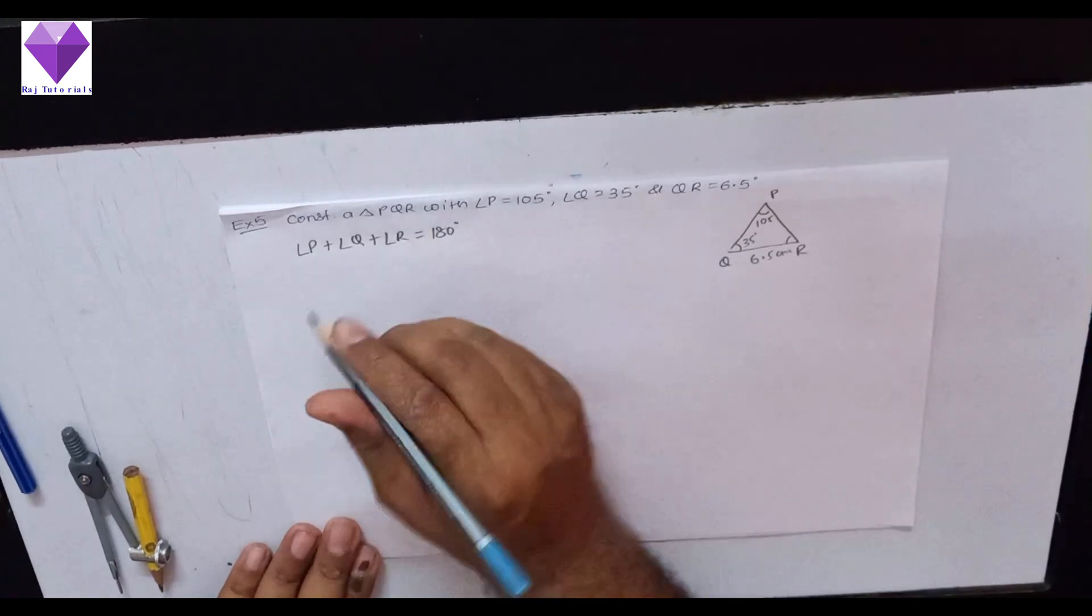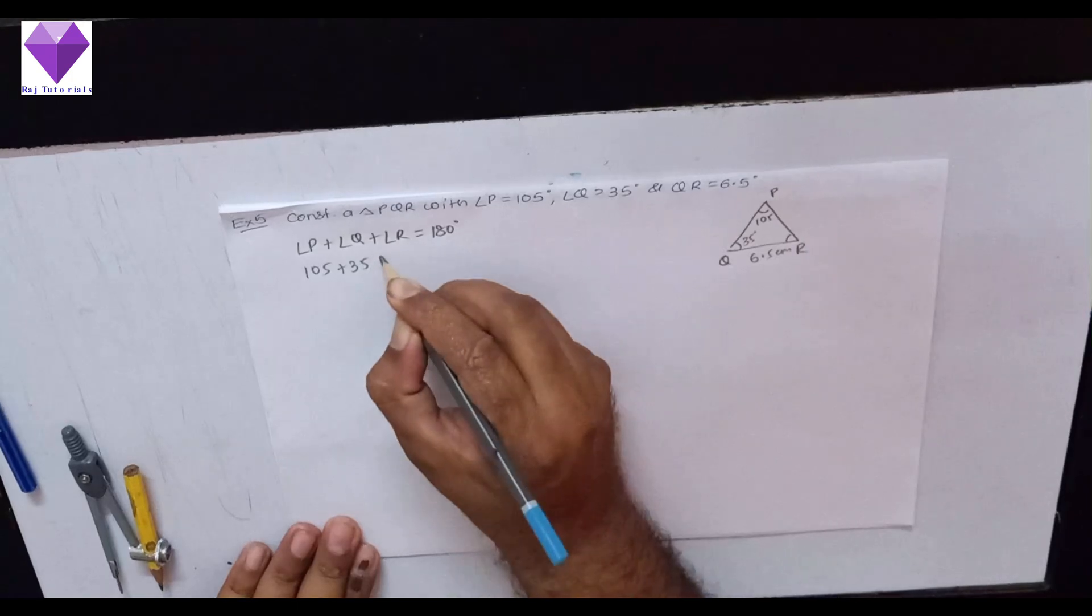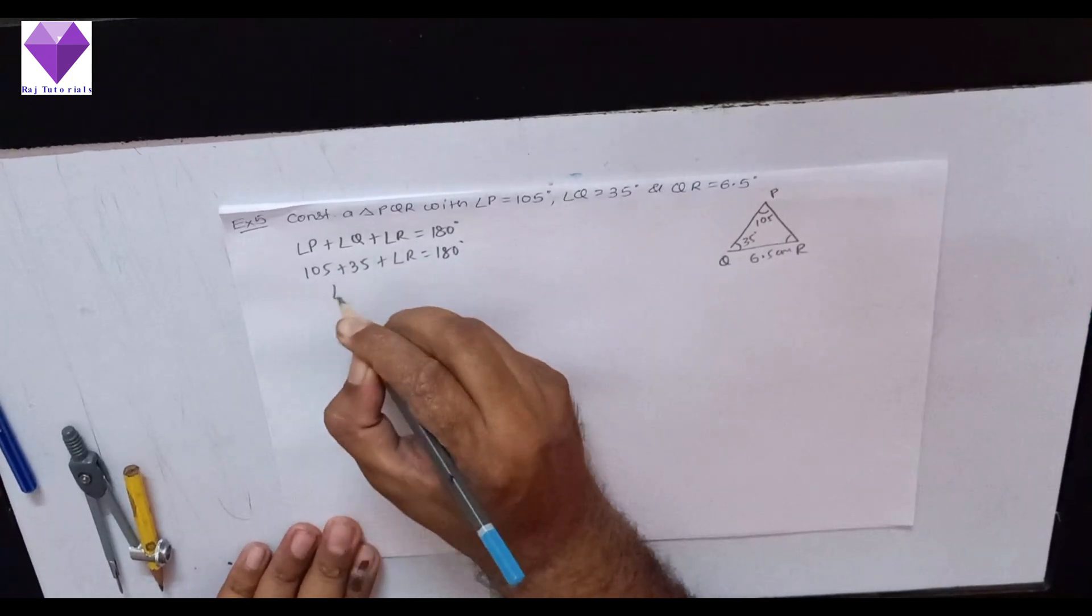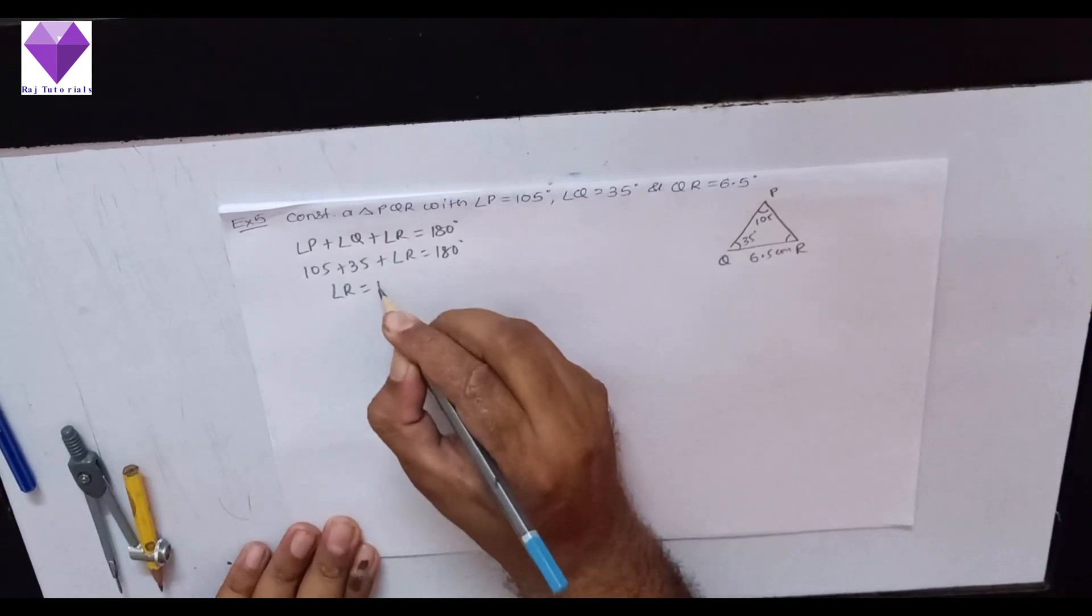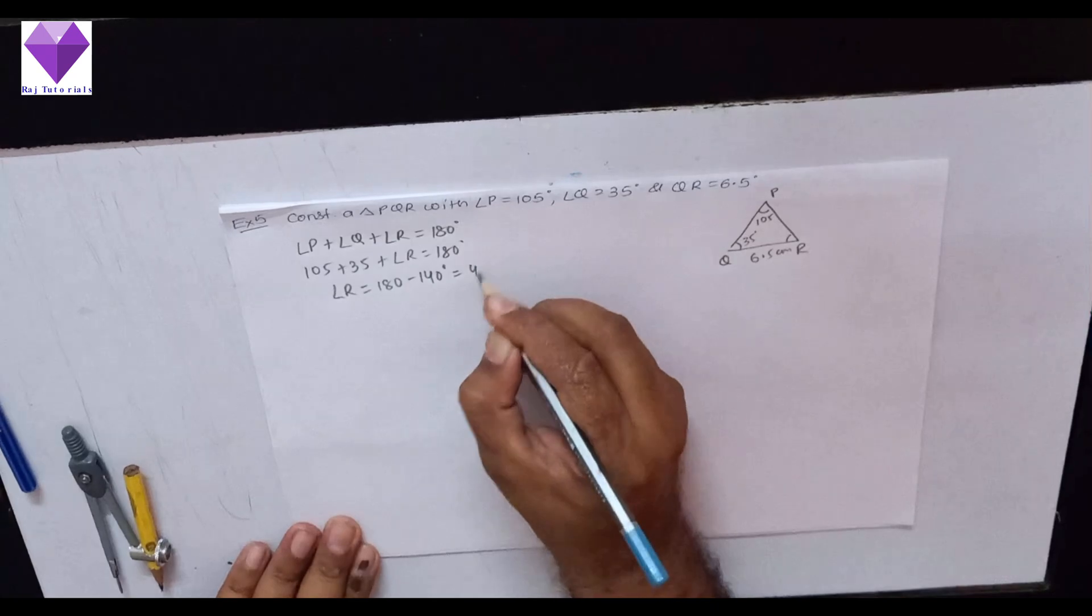Using the angle sum property of a triangle, 105 plus 35 plus angle R equal to 180, so angle R will be equal to 180 minus 140, so that will be equal to 40 degrees.